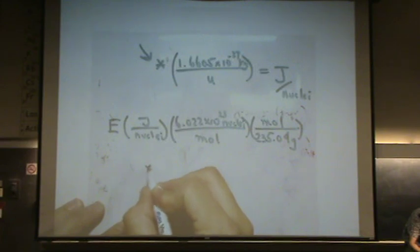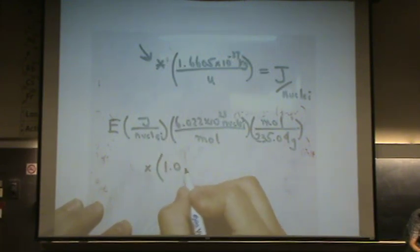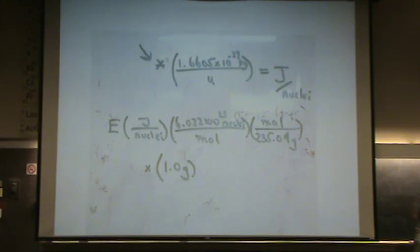I'm just going to do one more multiplication. I know there's one gram in this problem. If it was 5 grams, I'd multiply by 5 grams of uranium. If it was 74 grams, I'd multiply by 74. Whatever the amount of grams. In this case, it said one gram of uranium-235.